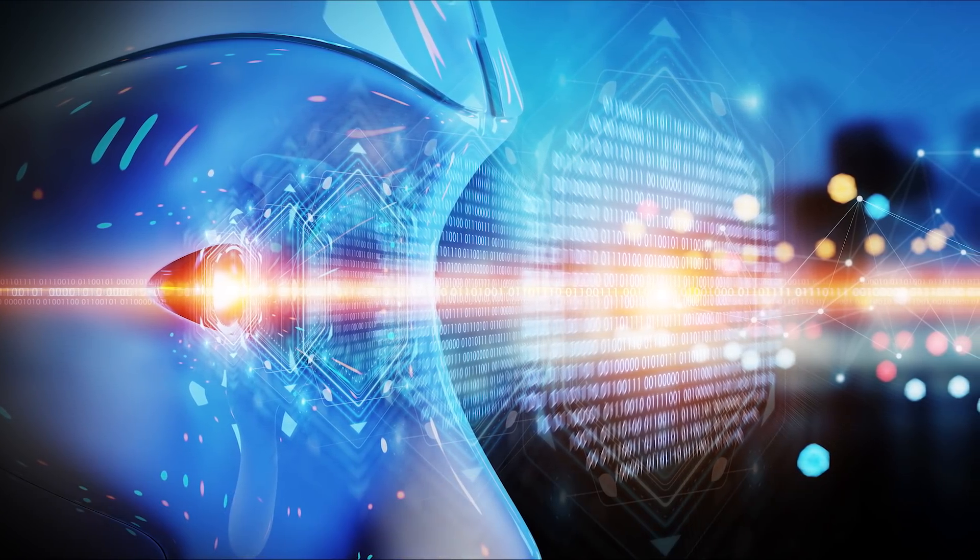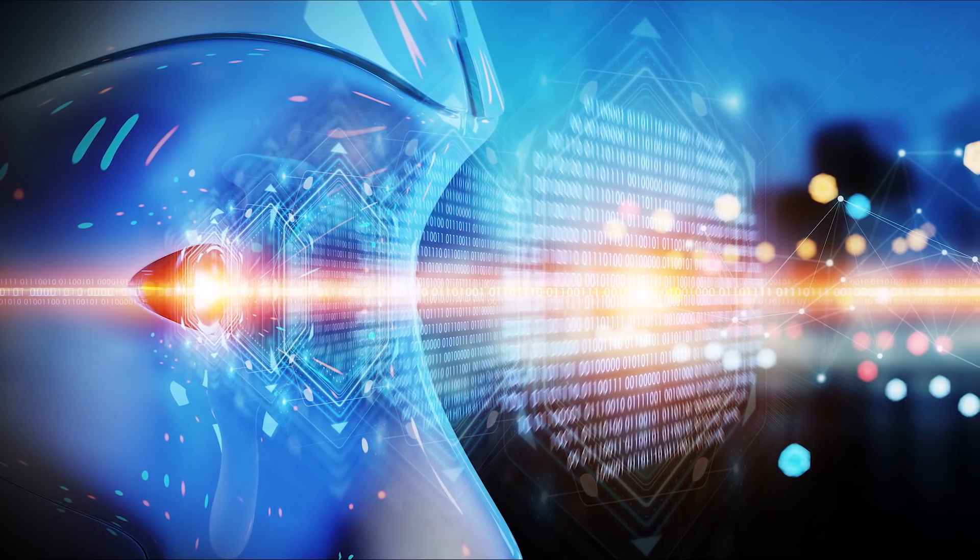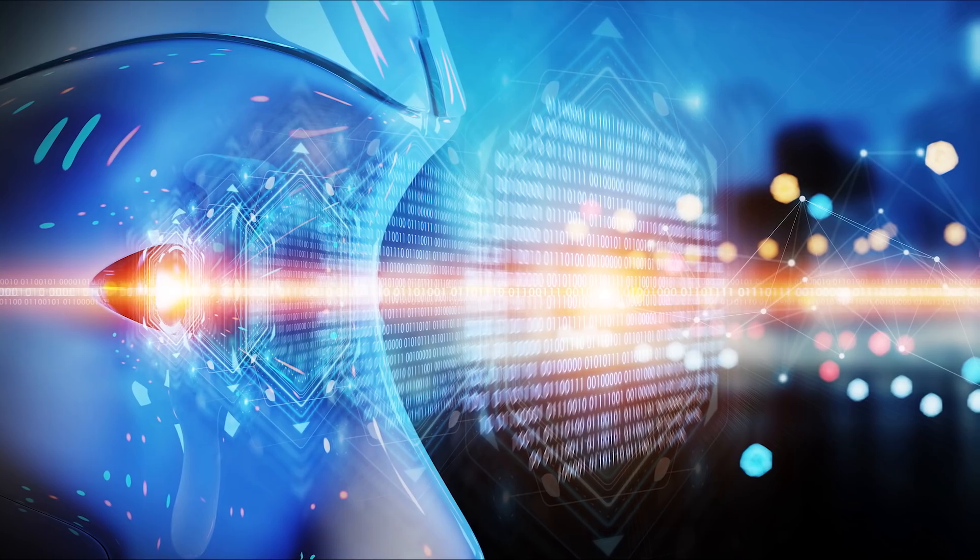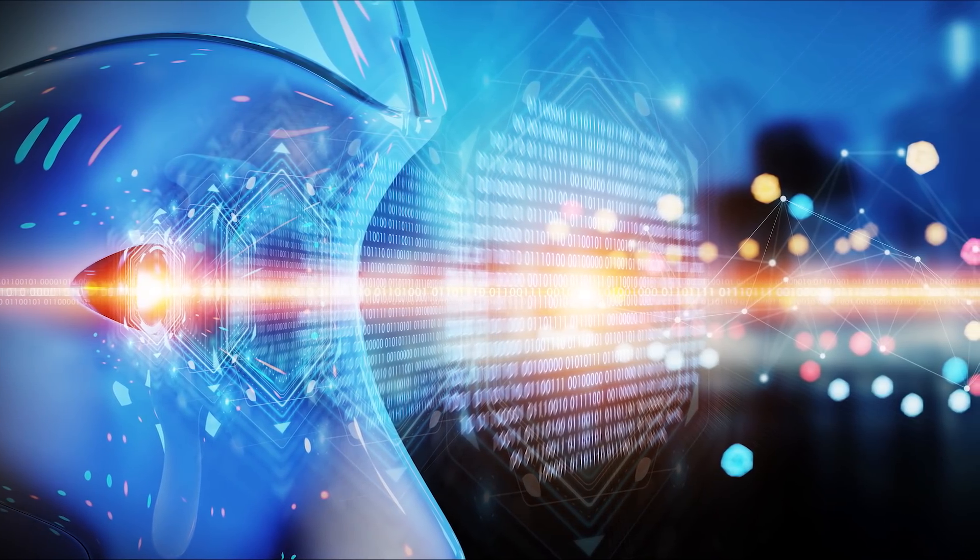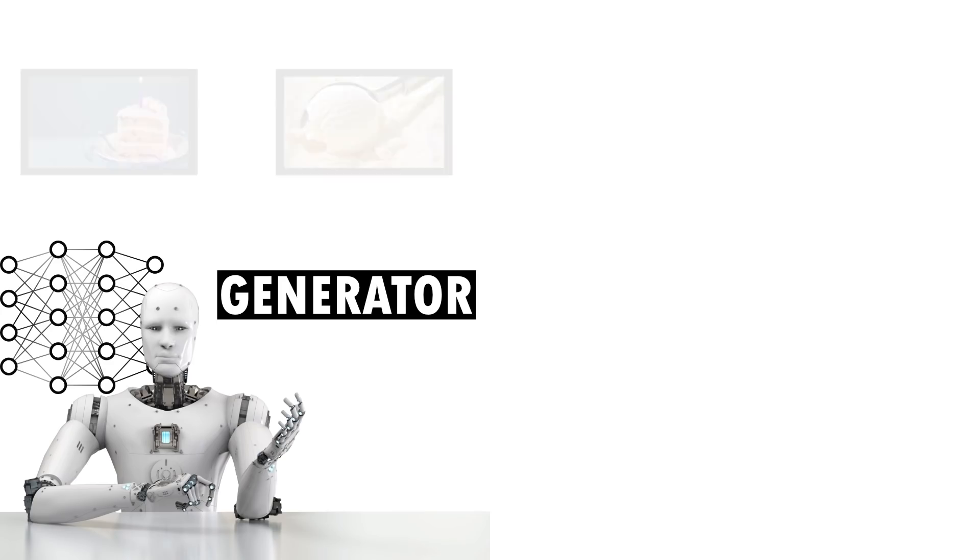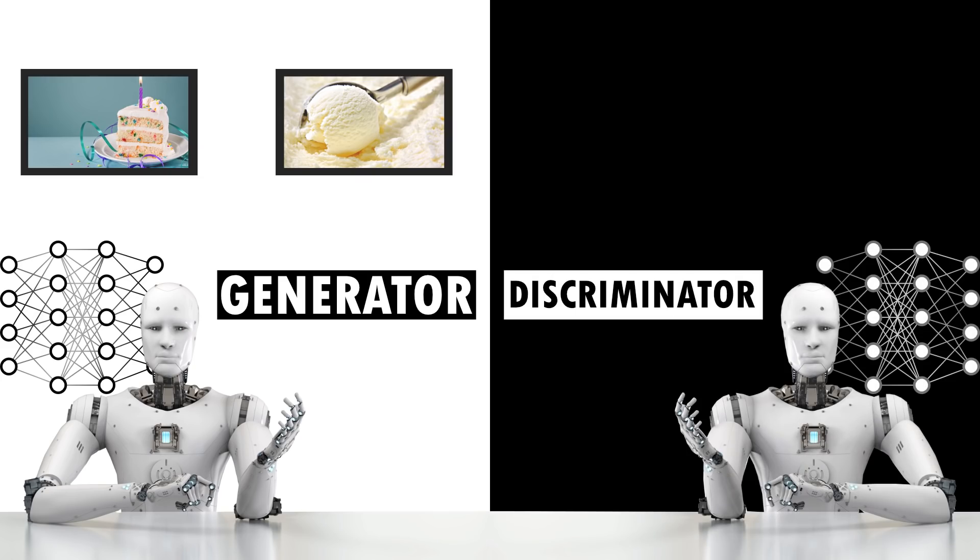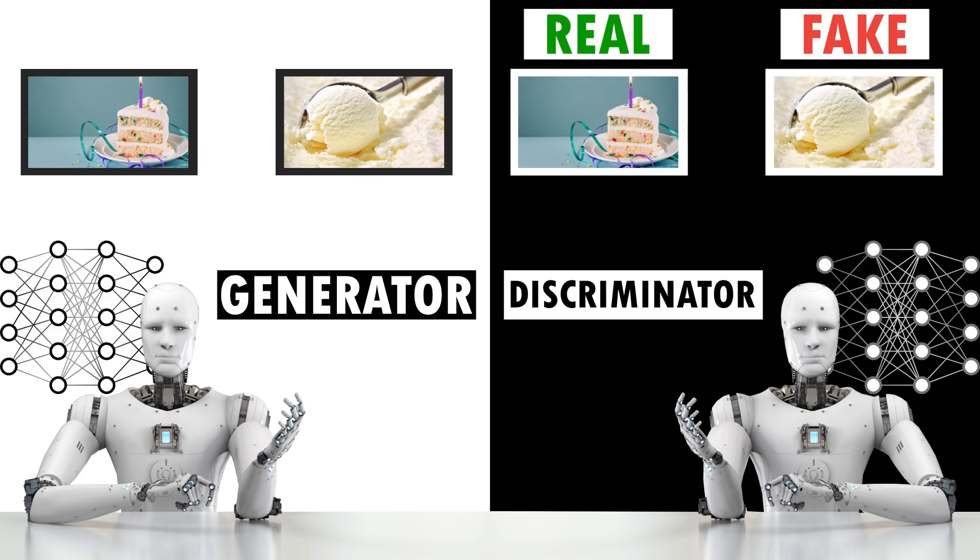GANs is the next frontier in machine learning and involves using two neural networks with opposing objectives to train one another, resulting in mind-blowing results. The first network is the generator, which is programmed to generate images from random noise with the goal to fool the other network called the discriminator, which is programmed to detect whether images are real or fake.